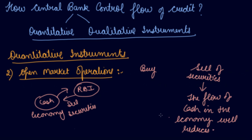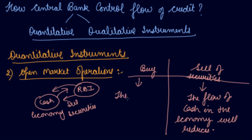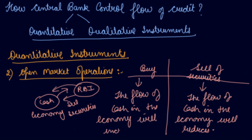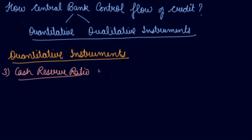When the RBI sells securities, the flow of cash in the economy will reduce as cash is held with the RBI, thereby reducing credit flow. Conversely, if the central bank buys securities from the public, the central bank gives cash to the public, increasing the flow of cash in the economy. This leads to more credit multiplication.